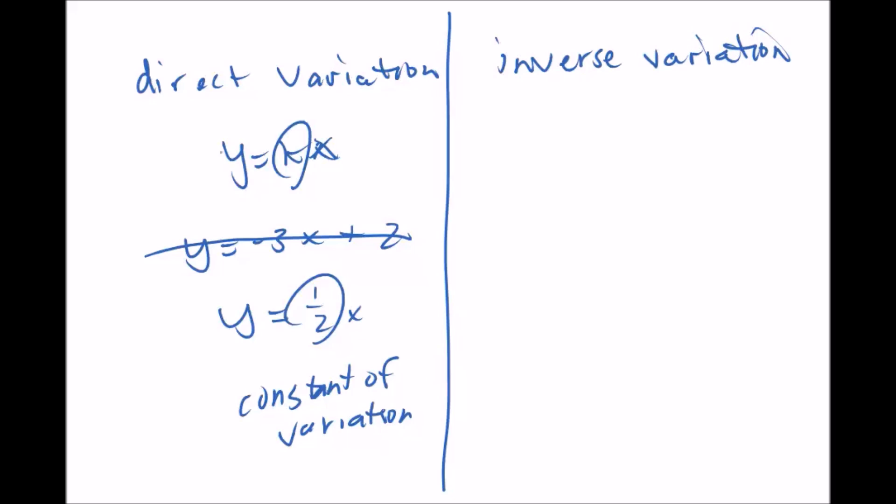For direct variation, as one of the variables increased, the other one increases as well. As y gets larger, x gets larger. Inverse variation is the opposite. It's written like this: y equals k divided by x, and k cannot be equal to 0. In this equation, this k is still the constant of variation.